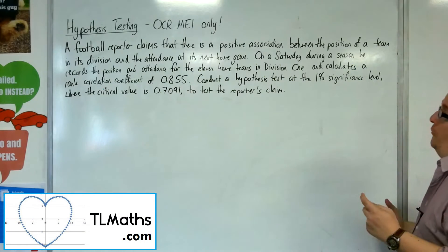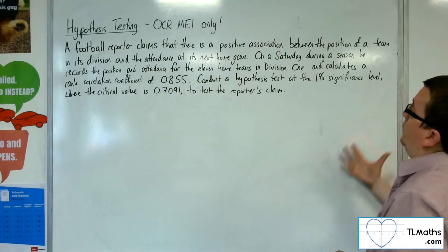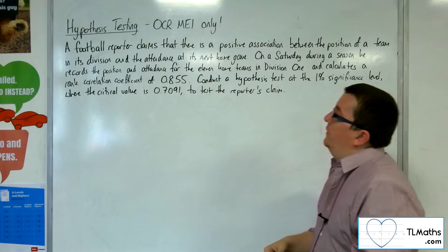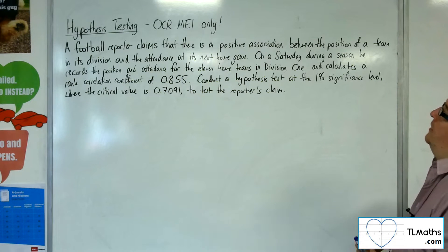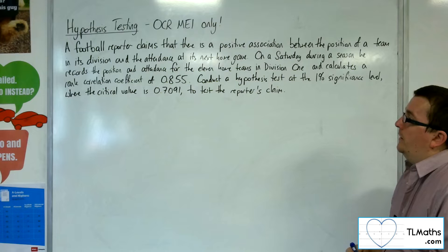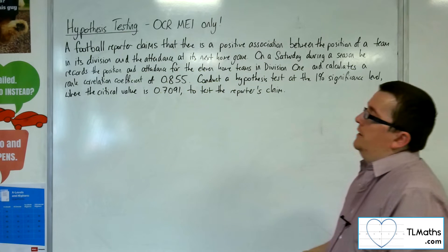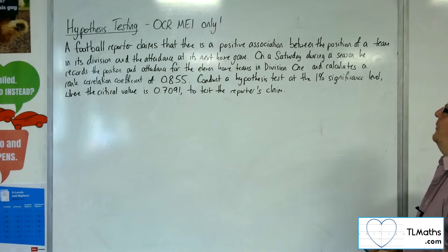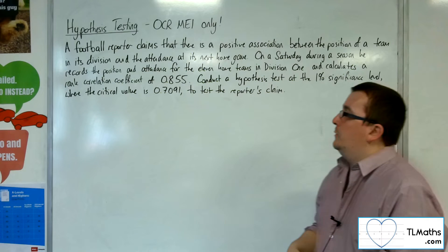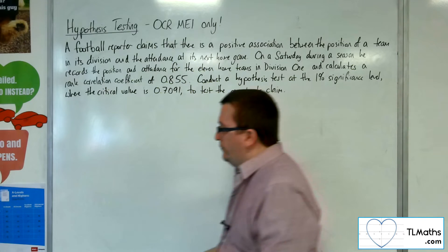In this question, a football reporter claims that there is a positive association between the position of a team in its division and the attendance at its next home game. On a Saturday during a season, he records the position and attendance for the 11 home teams in Division 1 and calculates a rank correlation coefficient of 0.855. Conduct a hypothesis test at the 1% significance level, where the critical value is 0.7091, to test the reporter's claim.